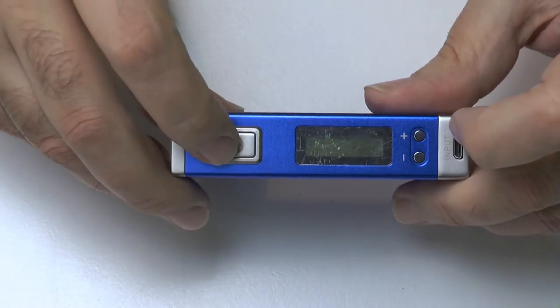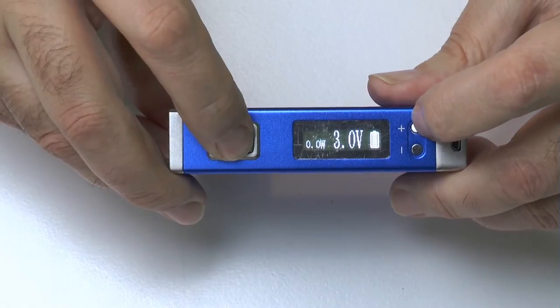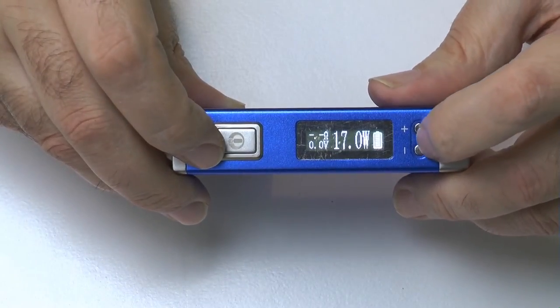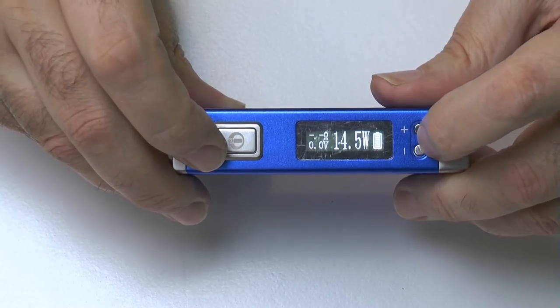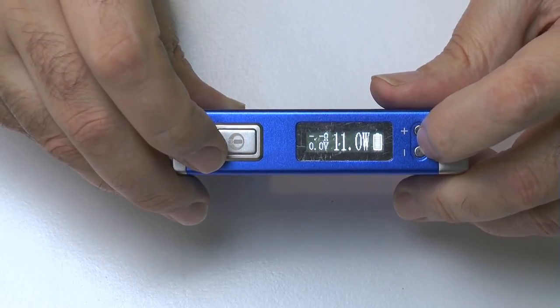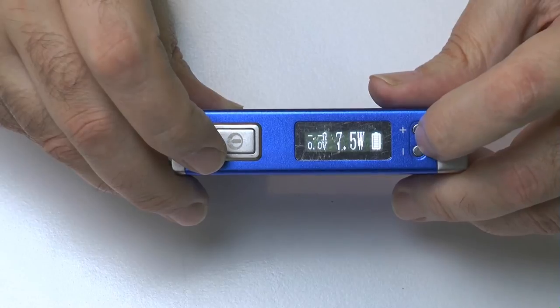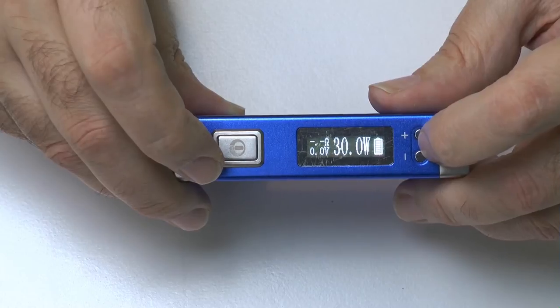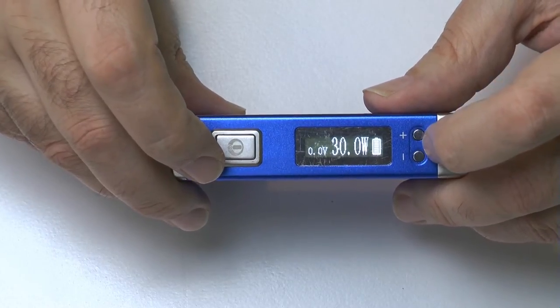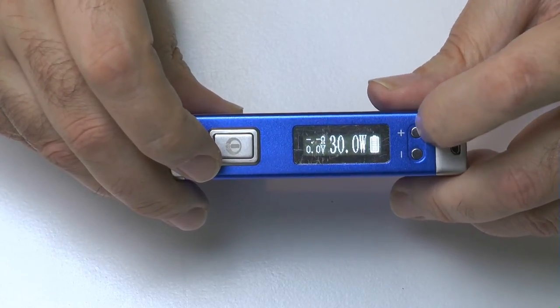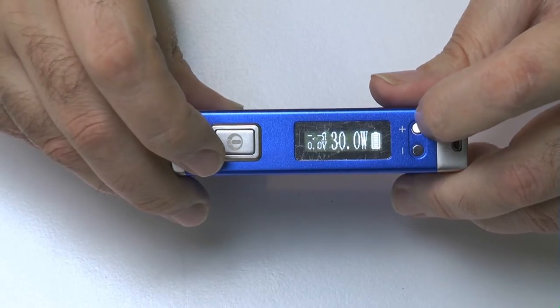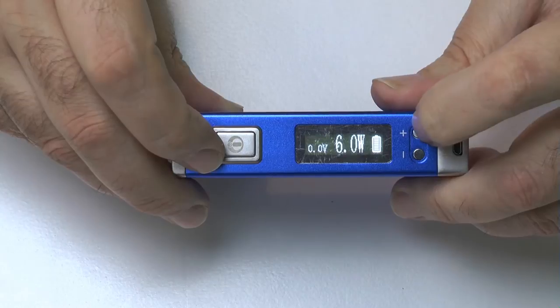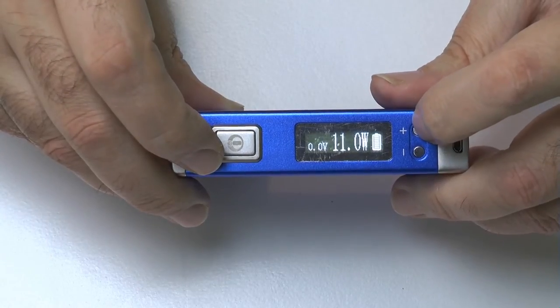To go back to wattage you press your fire button and hold down the plus button and now we are back in wattage and we can change the wattage from six watts all the way up to thirty watts and then once you hit either of those it will cycle around to the next. So it's gone from six there to thirty, we could go from thirty to six.